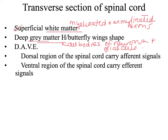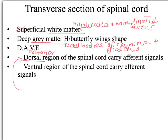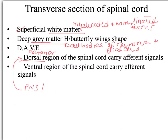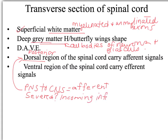The dorsal region of the spinal cord, or the posterior region, contains axons that bring sensory information to the spinal cord — going from the PNS to the CNS, which is afferent. If some part of the dorsal region is severed, the incoming sensory information is disrupted.